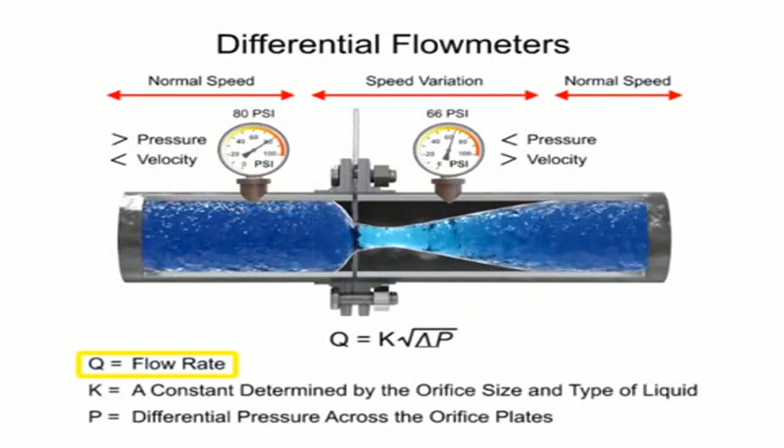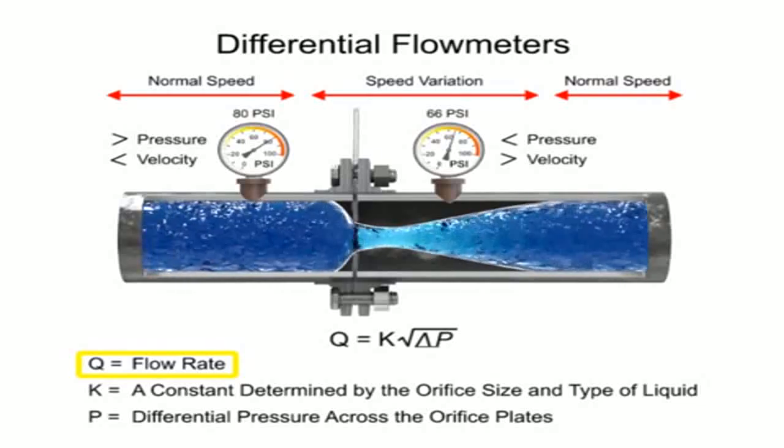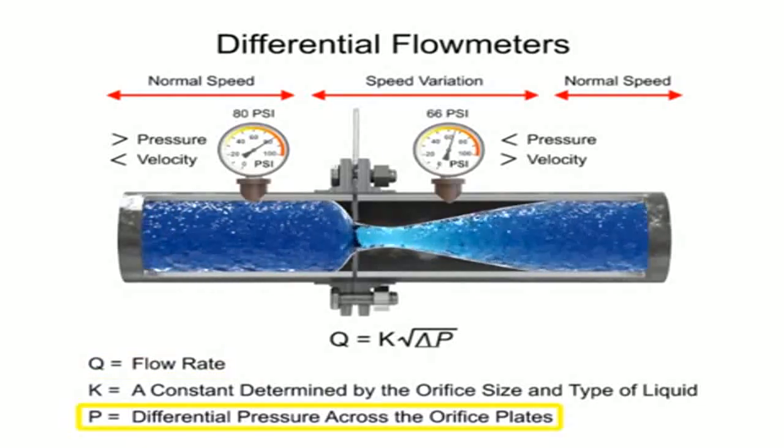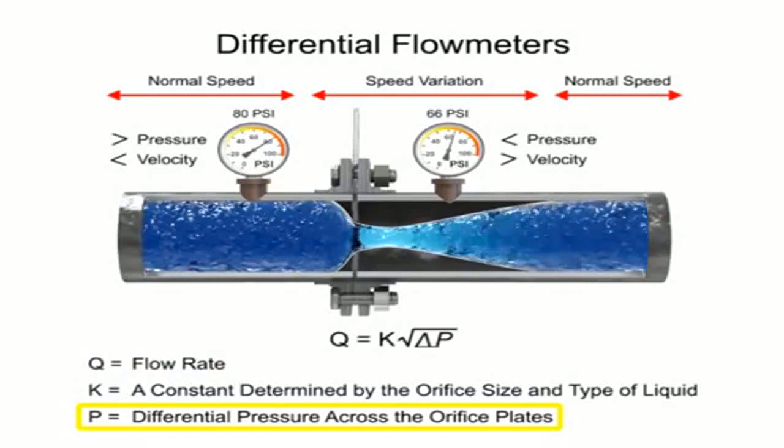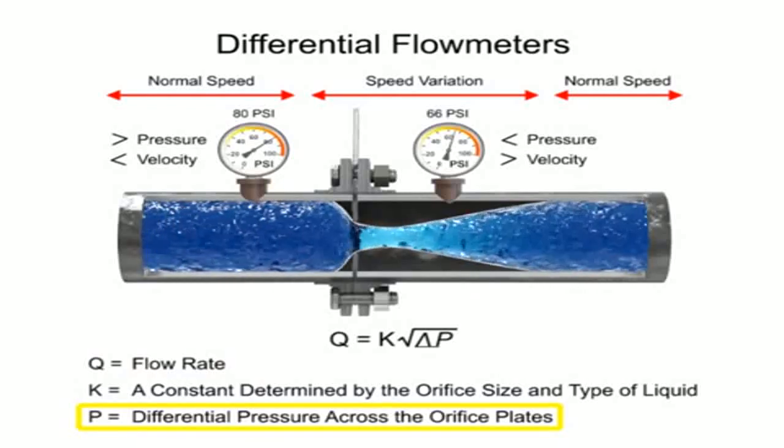The flow rate, Q, of a fluid through an orifice plate increases in proportion to the square root of the pressure difference on each side multiplied by the K factor.